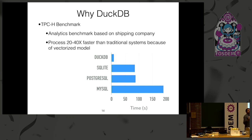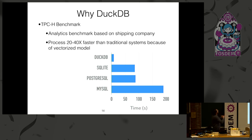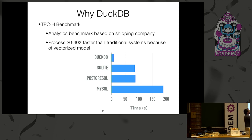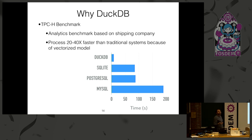You might ask, what difference does vectorization actually make? Here's a very crude benchmark: we ran the standard TPC-H benchmark on different systems. DuckDB is clearly much faster — generally around 40 times faster than a traditional tuple-at-a-time engine. But you might say, that's a nice academic pet project — what about something I can actually use seriously?